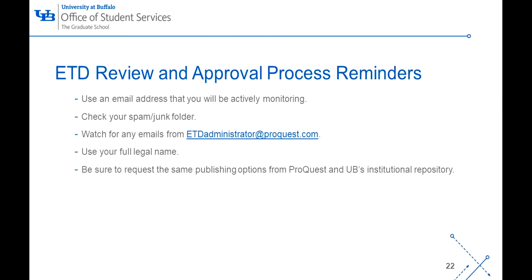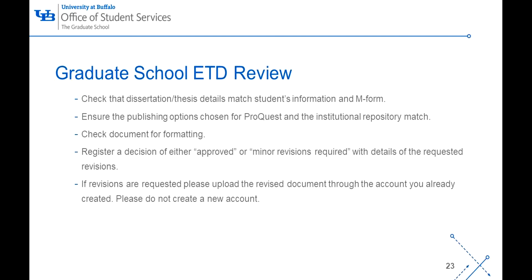Here are some reminders for the ETD review and approval process. Use an email that you will be actively monitoring and check your spam or junk folder. Watch for any emails from ETD administrator at proquest.com. Use your full legal name when creating the submission profile, and be sure to request the same publishing options from both ProQuest and UB's institutional repository. After you've submitted through the ETD administrator website, we will review your ETD — first checking that the dissertation or thesis details match the information on the M-Form, ensuring the publishing options chosen match, and checking the document's formatting. We will either register a decision of accepted or minor revisions required. If revisions are requested, please upload the revised document through the account you already created. Please do not create a new account.